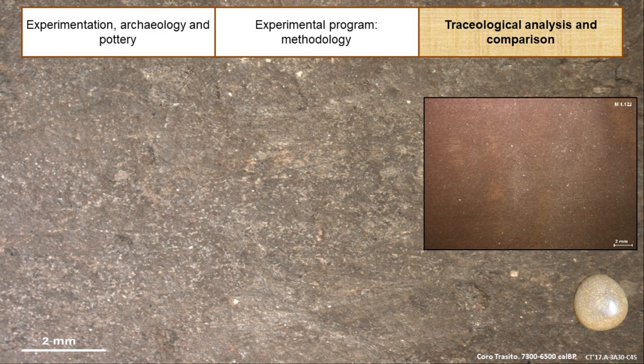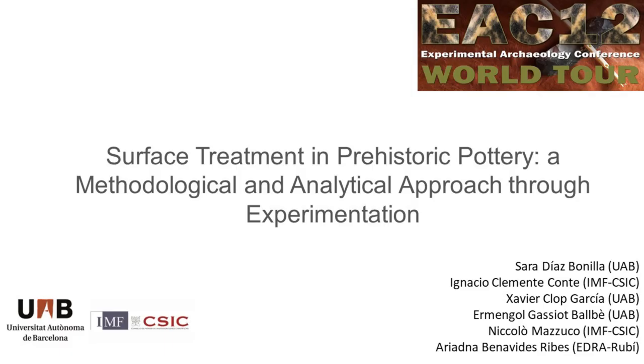This archaeological fragment, on the other hand, shows a high labour investment in time. The trace has disappeared due to the back-and-forth movement and the burnishing is regular and homogeneous. The potential of the proposed methodology for the archaeological and textural analysis of surface treatment in pottery is highlighted. Hence, the possibility of discriminating different surface treatment techniques opens new perspectives for the study of prehistoric pottery. Thank you for your attention.